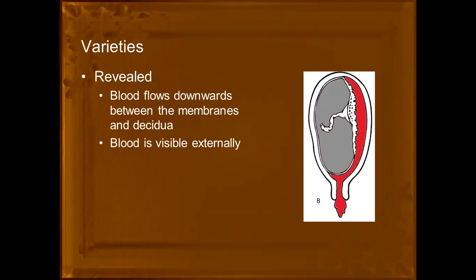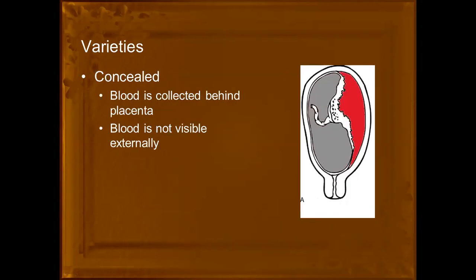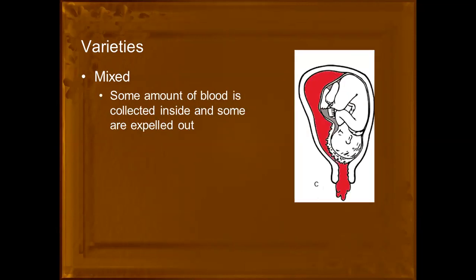To summarize: in the revealed type, bleeding starts behind the placenta and then flows outside — the blood is visible externally. In the concealed type, blood is collected behind the placental site and not visible outside. In the mixed type, some blood is collected behind the placental site and some is visible outside.